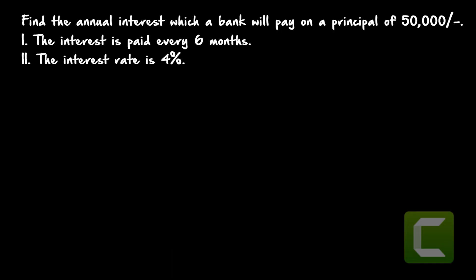Hi friends, welcome to today's video. Today we are dealing with data sufficiency questions related to simple interest and compound interest. Let's go to the first question: find the annual interest which a bank will pay on a principal of fifty thousand.